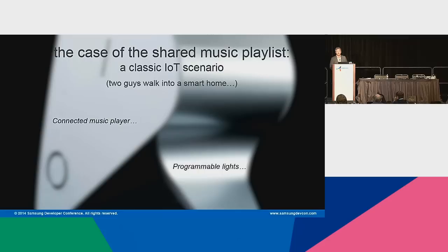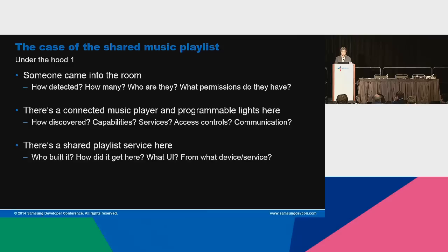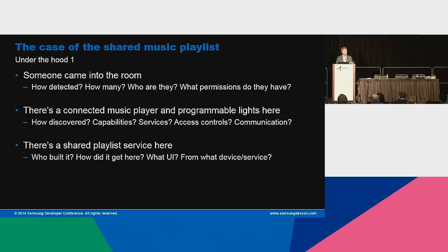Now let's think about what it takes to actually do that. Someone came into the room — how did we detect that? How many people came in? Who are these people? When they come into the living room, what rights do they have there? The person who lives there most likely has higher rights than his friend. But I don't know that. People are going to say they don't want just anybody to walk into their smart home and control it, so there has to be some kind of permissioning. How do you set those permissions? Where do they live? How do you identify these people? Do they have an identity in the cloud communicated through their phone, or through face recognition in the environment? A lot of questions just around that basic recognition.